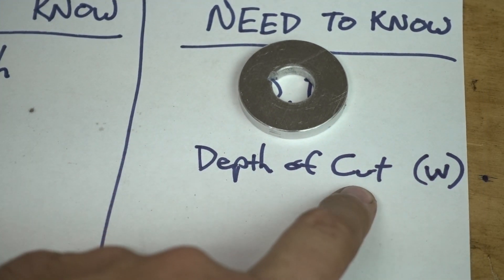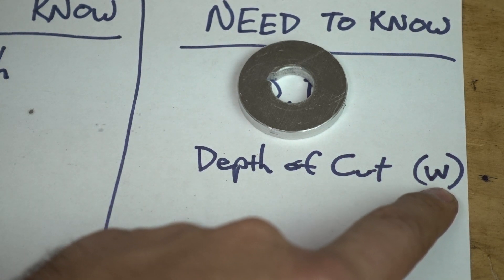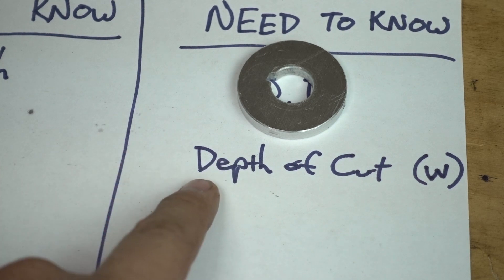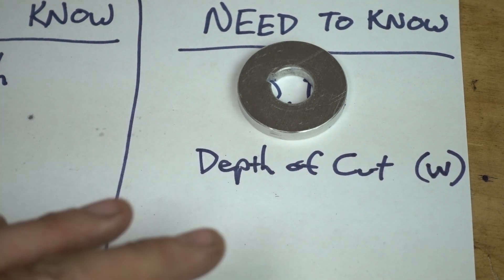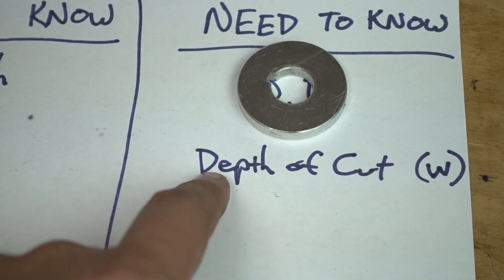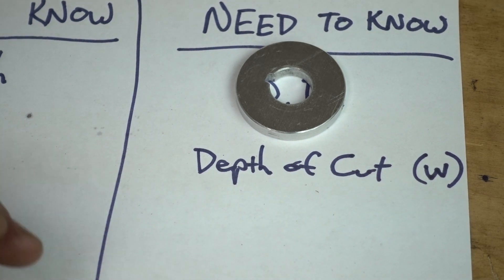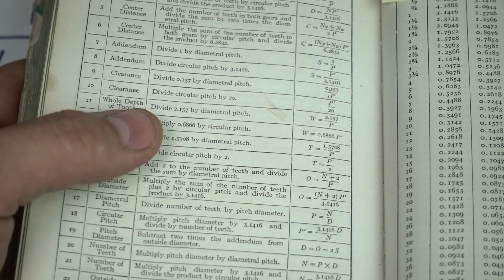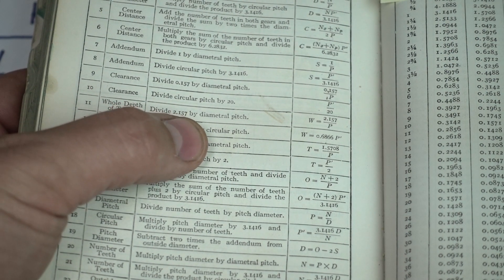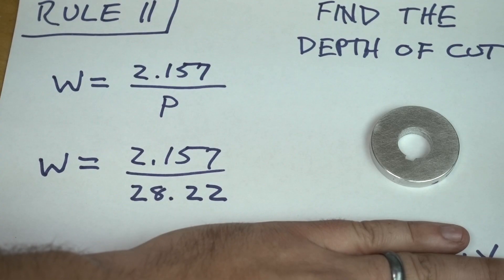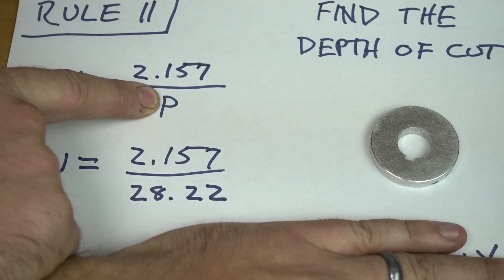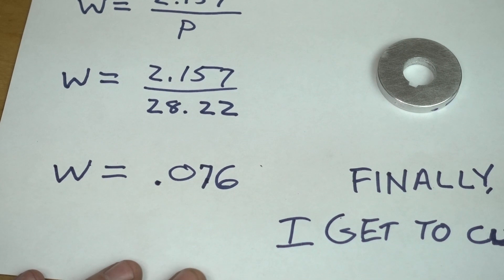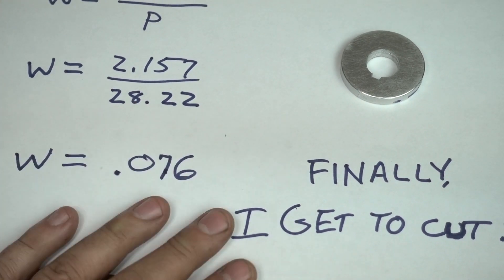Now all I need is the depth of cut — listed as W in Machinery's Handbook. Rule 11: whole depth of tooth — divide 2.157 by the diametral pitch. So W equals 2.157 divided by 28.22, and that gives us a depth of cut of 0.076 inches. Finally, I get to cut.